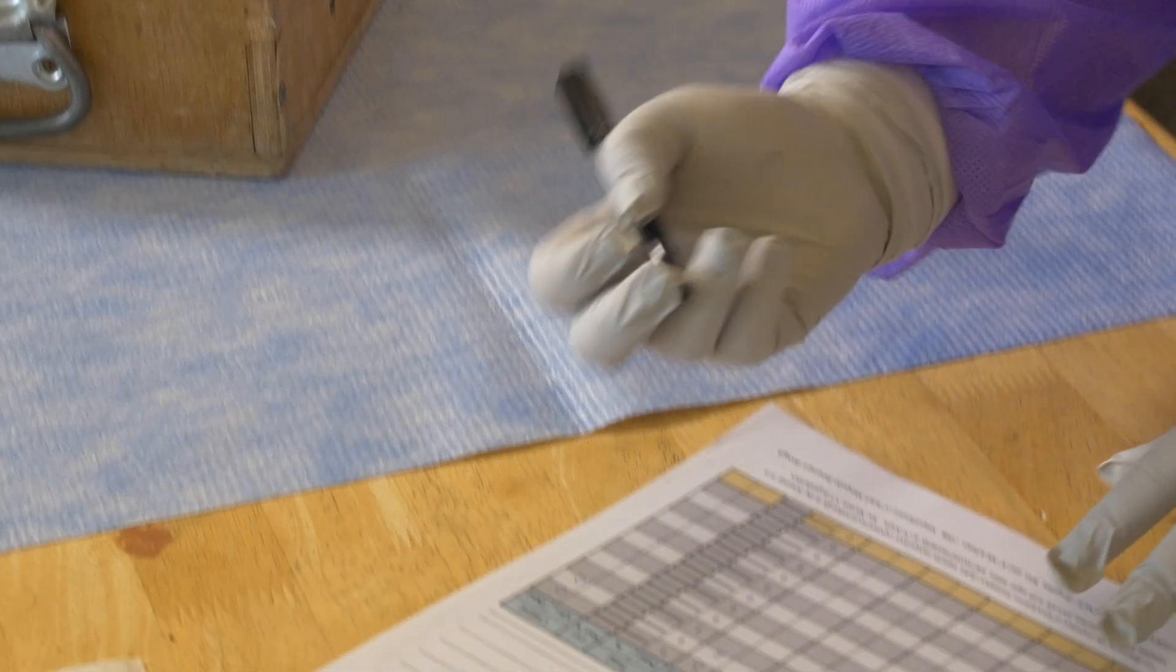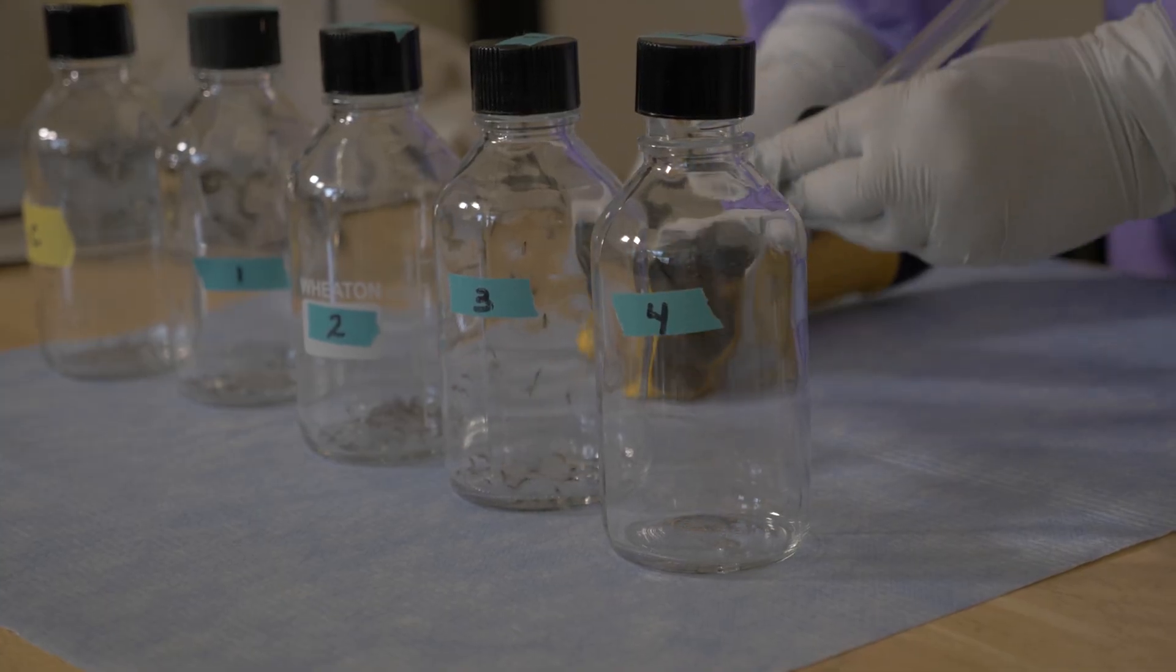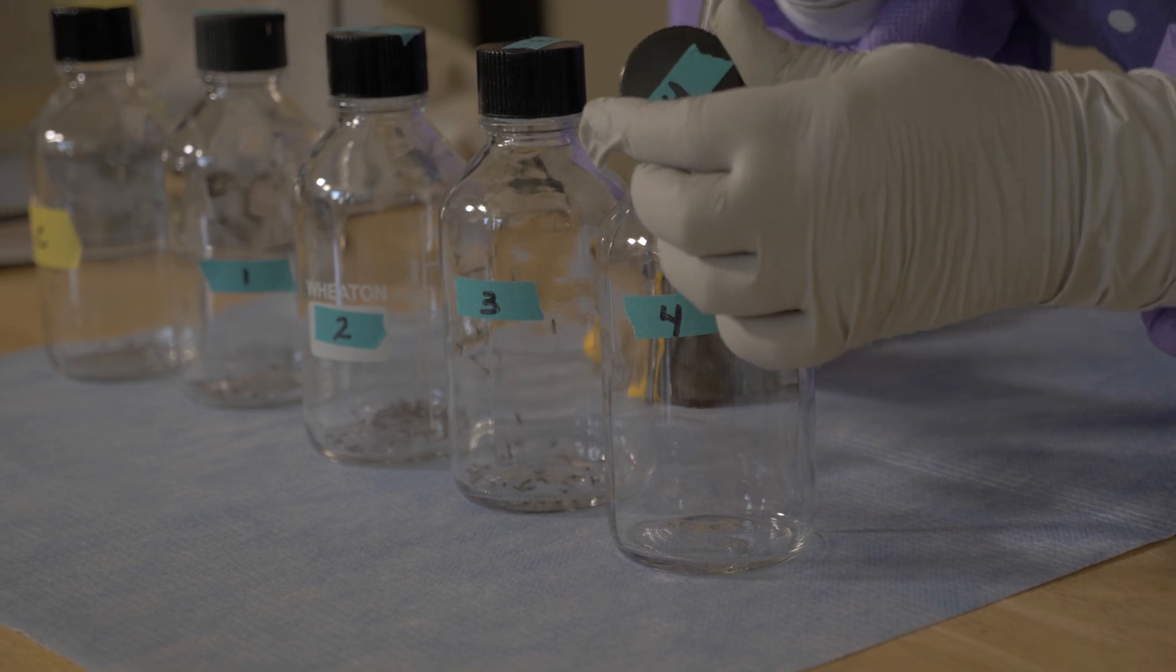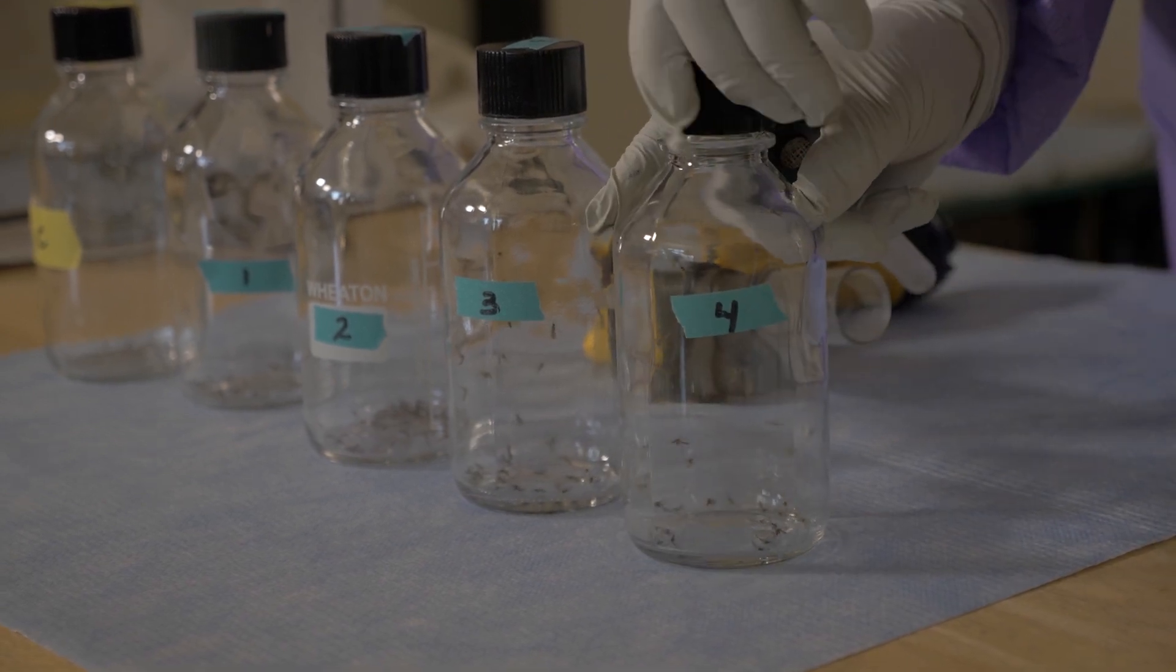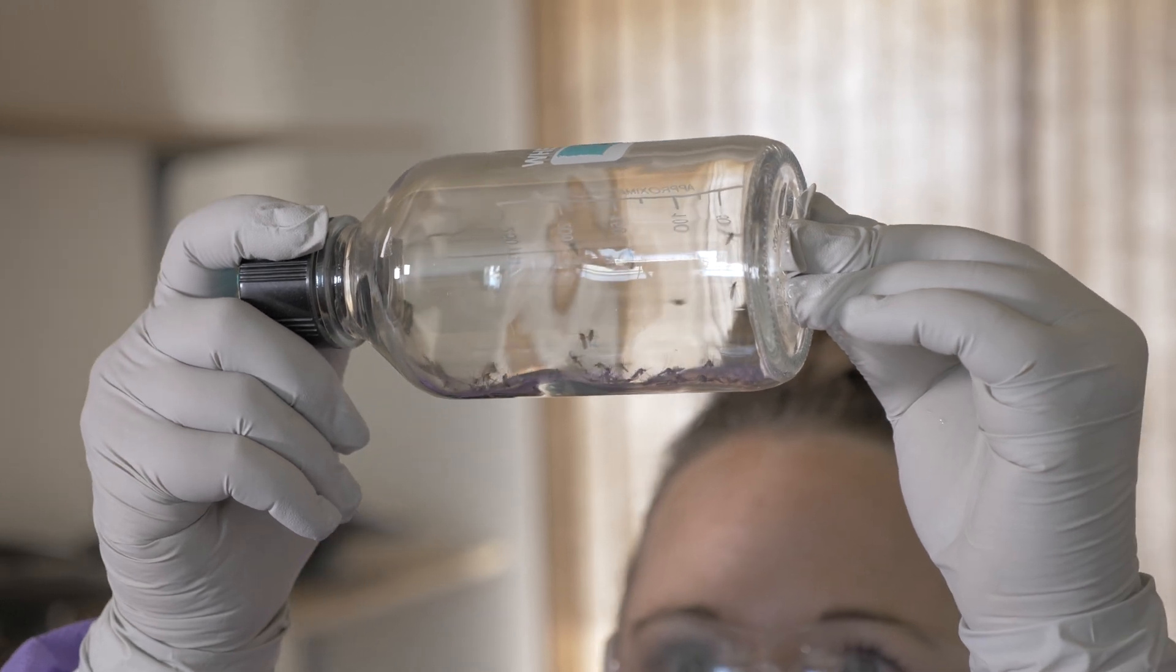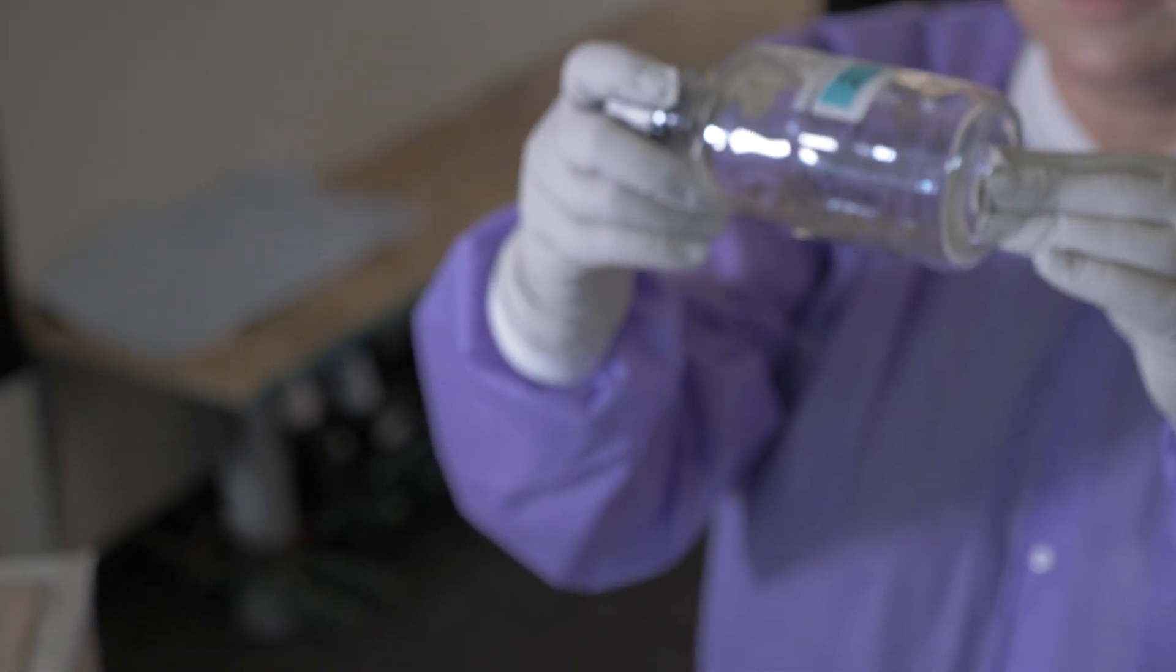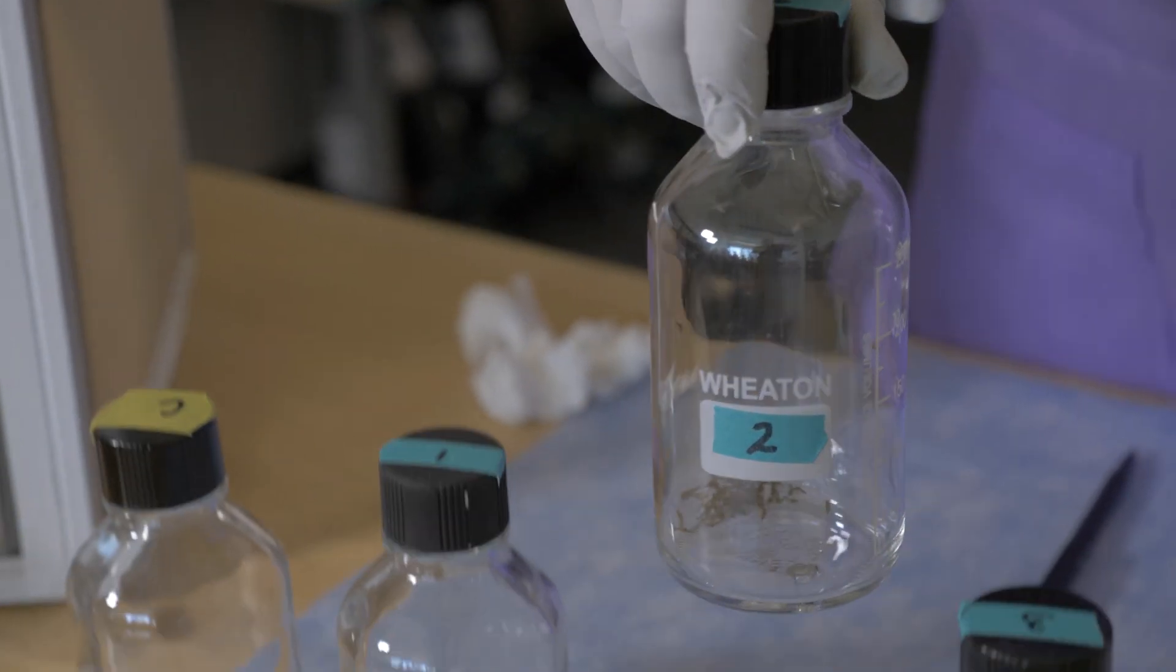CDC has developed a test, or assay, to determine if a particular active ingredient in an insecticide is able to kill mosquitoes. In particular, it detects changes in the time it takes an insecticide to kill a mosquito. The technique, referred to as the CDC Bottle Bioassay, is simple, fast, and cost-effective compared with alternatives.